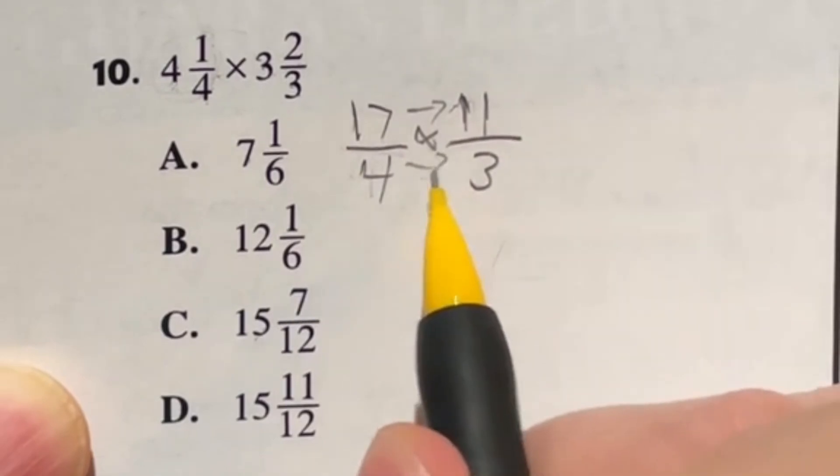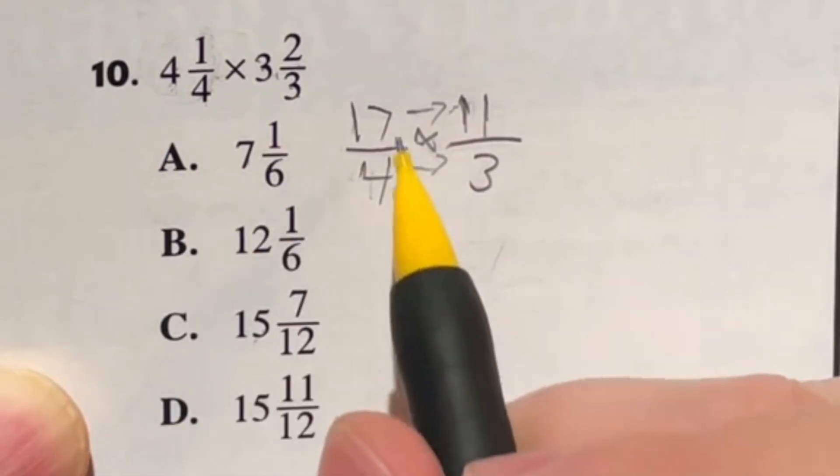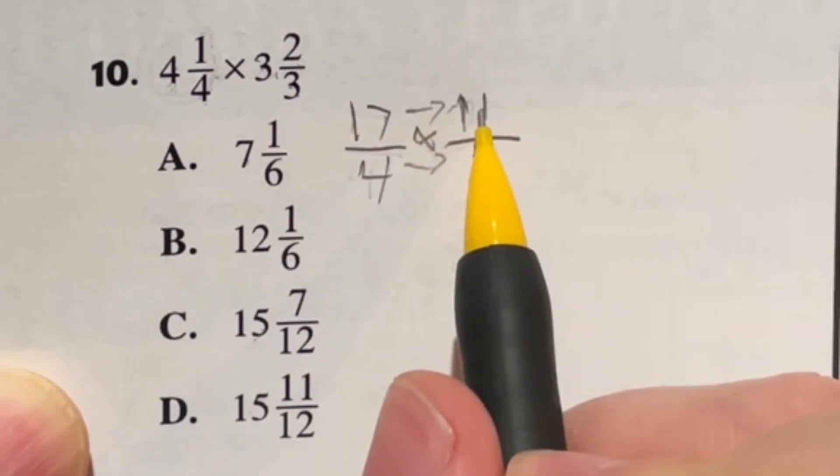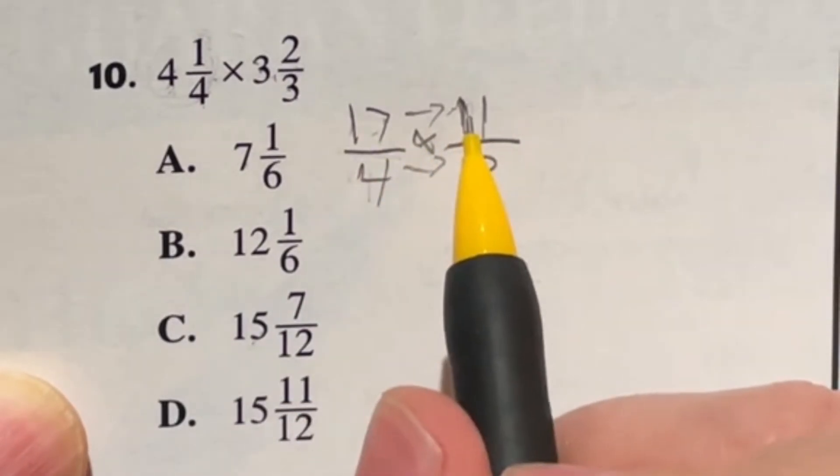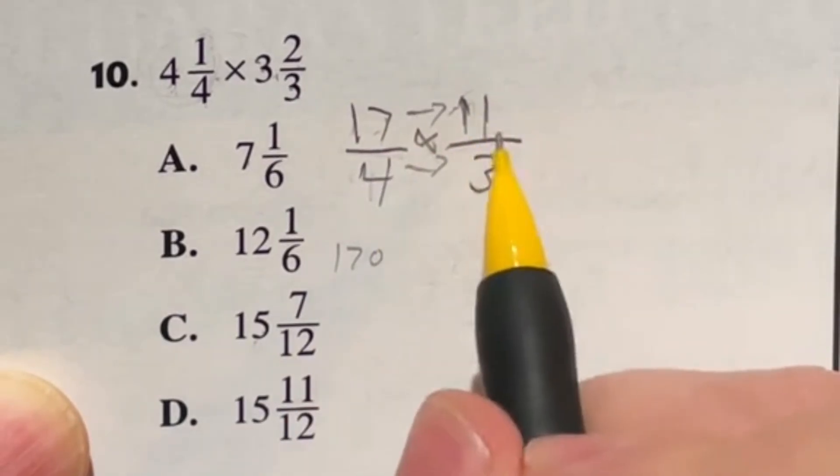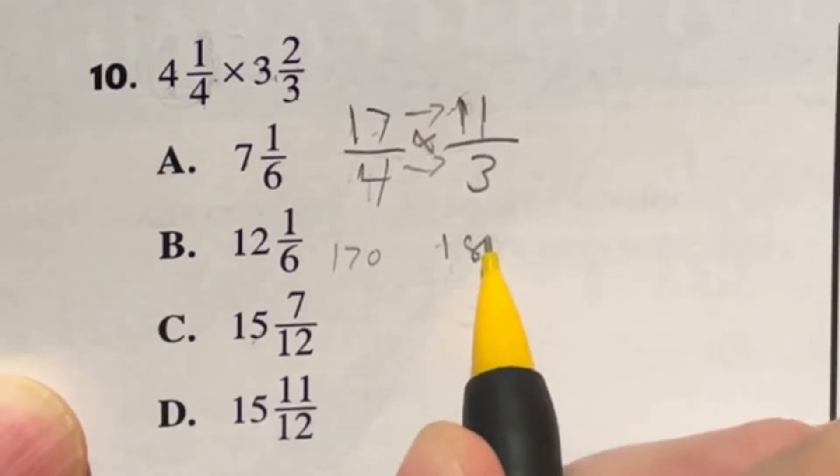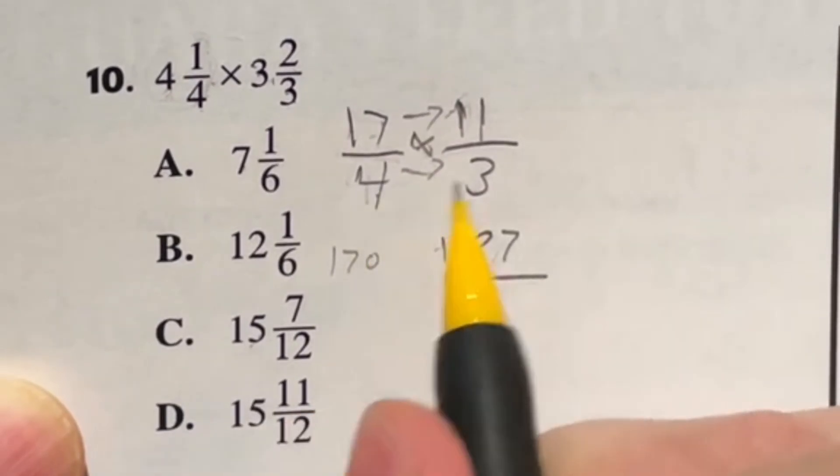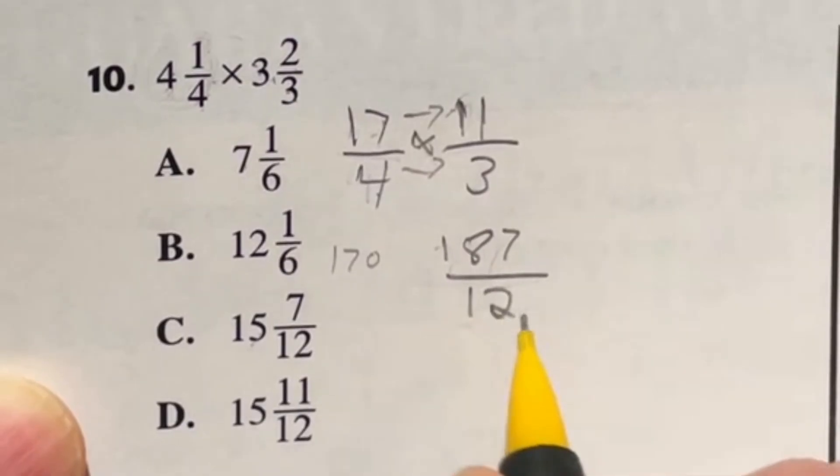So now we got 17 times 11. Well, 17 times 10 is 170, plus another 17 to get us up to that 11th one is going to end up giving me 187. Over four times three is going to be 12.